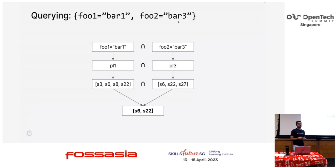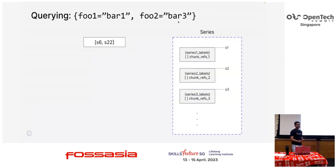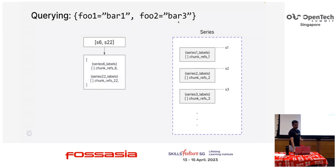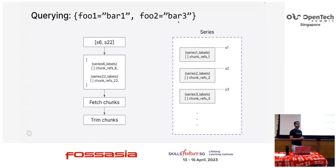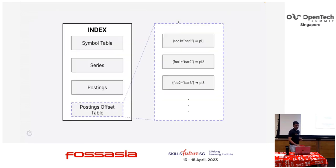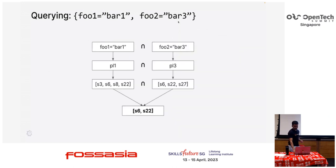Now you have S6 and S22 — you just take those references again, look at the series table, and you get the series. The series now tells you what chunk references you have. You can then fetch the chunks and do the query on that. Depending on the time range you queried — let's say you queried from T1 to T2 — you just trim the chunks when giving back to the API caller.